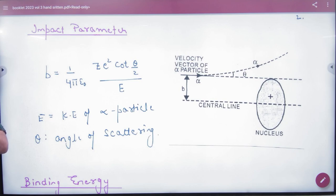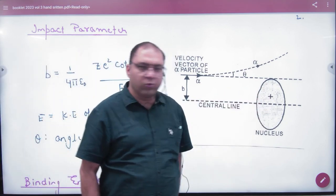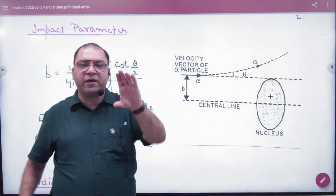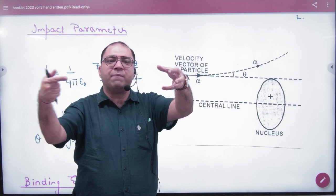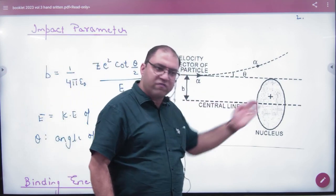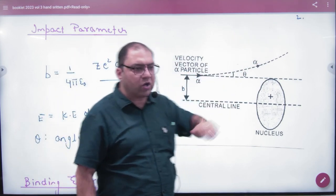In the Rutherford experiment, when there is a nucleus here and the alpha particle is coming, some alpha particles came along the center line and went back. Some came from far away with little deflections and some went straight.